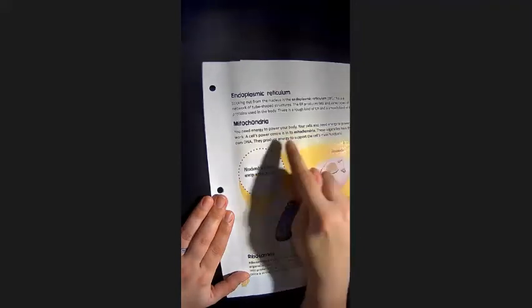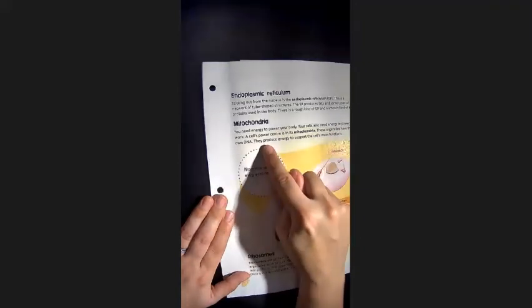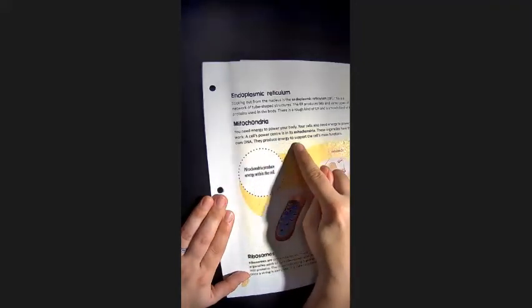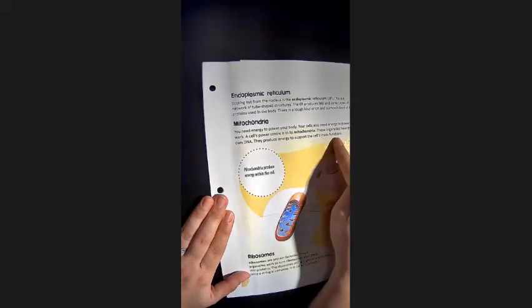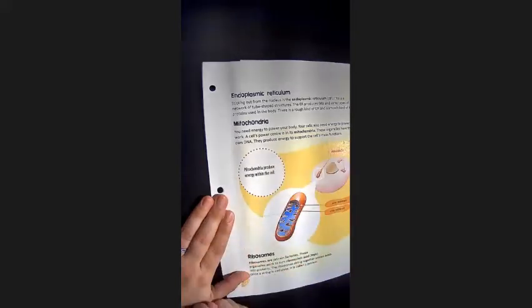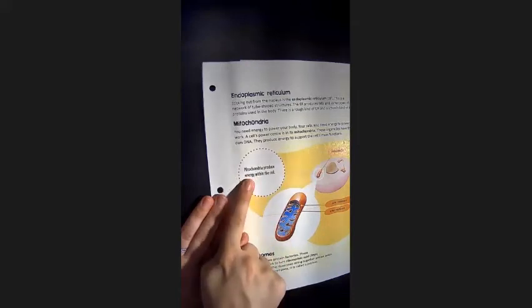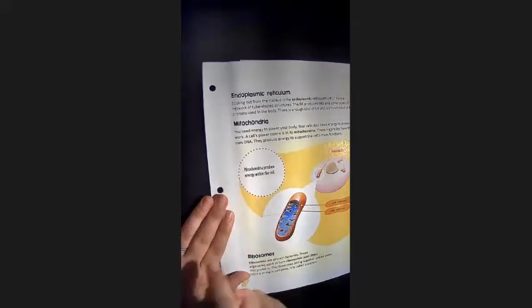These organelles have their own DNA. They produce energy to support the cell's main functions. Mitochondria produce energy within the cell.